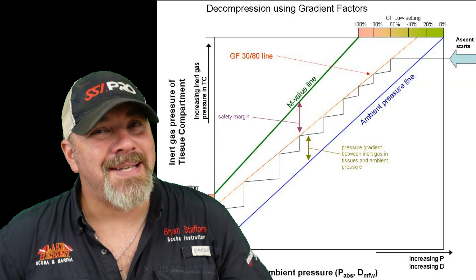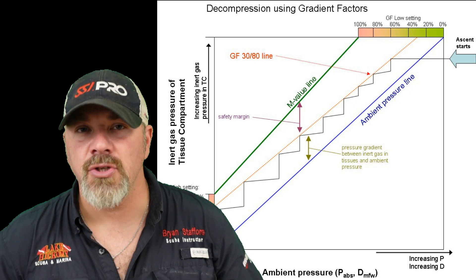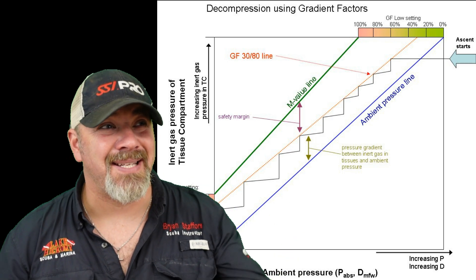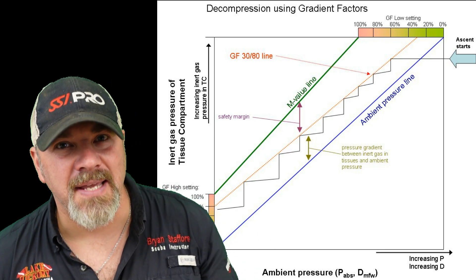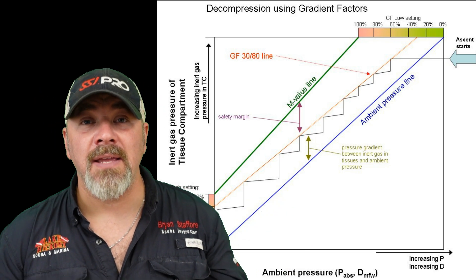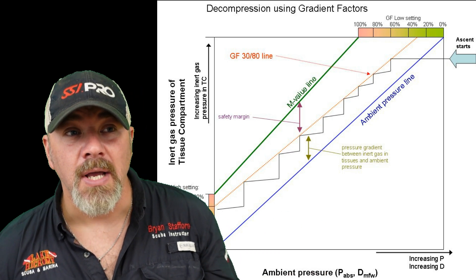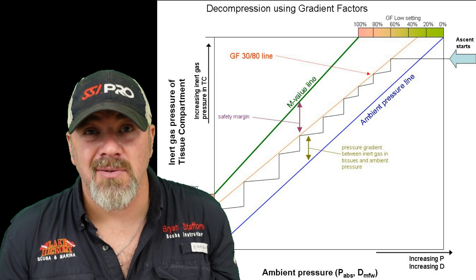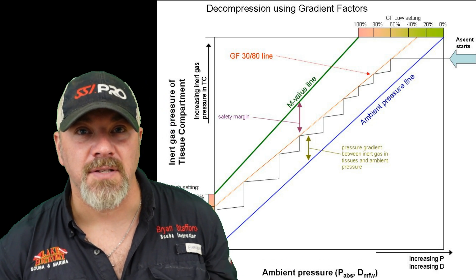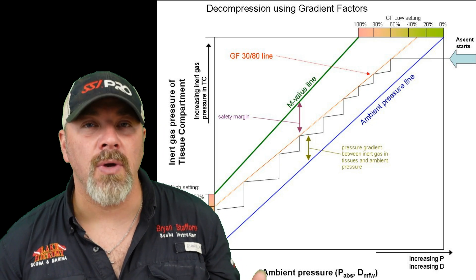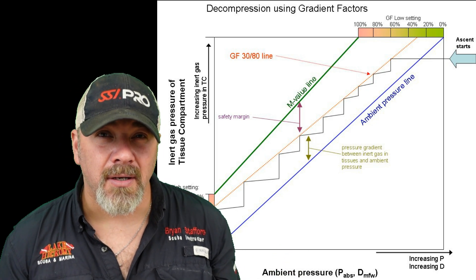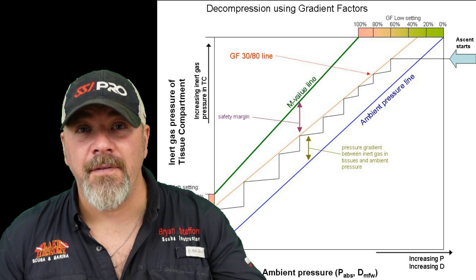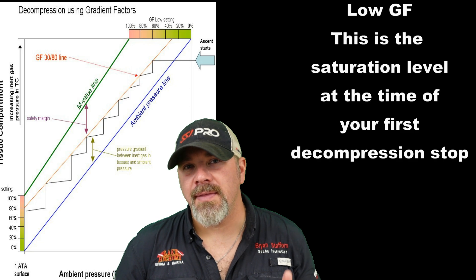Now that we understand what an M value is, let's discuss what a gradient factor is. In short, a gradient factor is a modification to the algorithm itself. If we think of a mathematical equation that tells us how much nitrogen is in us at a certain depth and time — like the dive tables or your computer — if we modify that algorithm we can either make it more conservative or more liberal. If we want to be a little bit safer and more conservative where we're not saturating quite as much, then we can lower those gradient factors. Let's look at what a lower gradient factor versus a high gradient factor means and how it affects us throughout a dive.